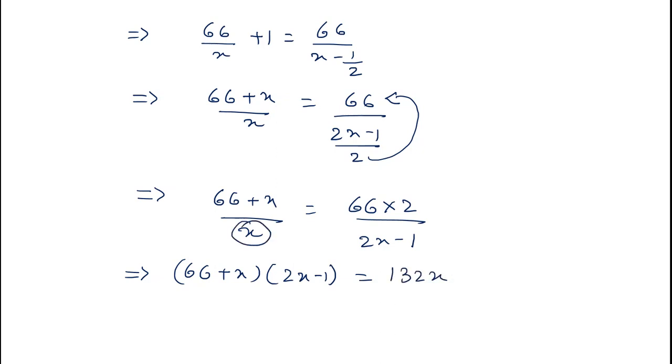Now multiply the two terms in the LHS. It will become 132x minus 32x minus 66 plus 2x square minus x is equal to 132x.